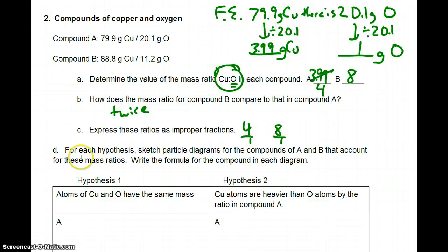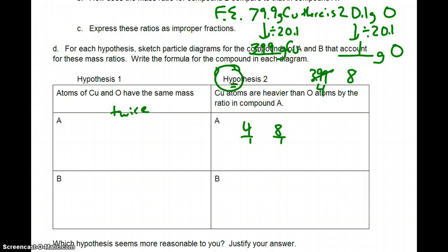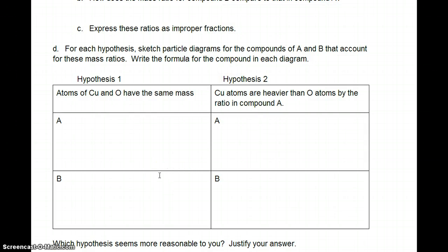And so then we have 4 to 1 versus 8 to 1 here. So sketch the particle diagrams. Let's just go ahead and scroll down. So Cu and O have the same mass. Well, we said that this was 4 to 1 and 8 to 1. So if Cu and O have the same mass, that means that if I use triangles for Cu and circles for O, that means that I have 1 O and 4 Cu's. Let's just make it there.